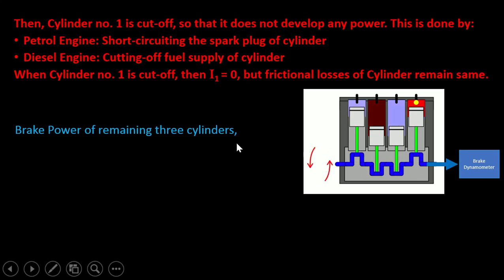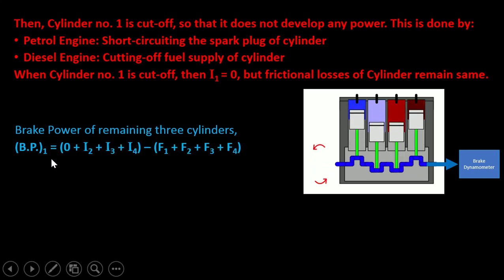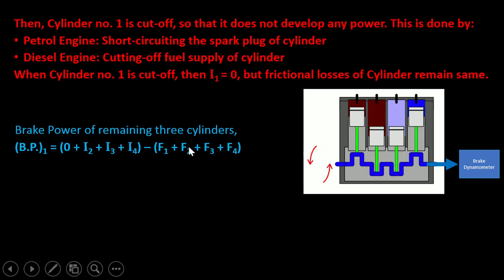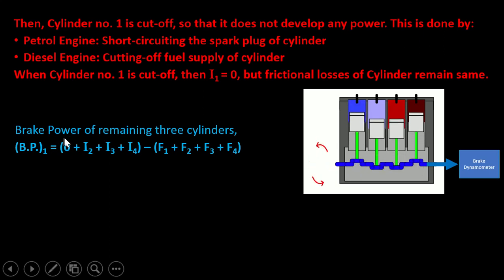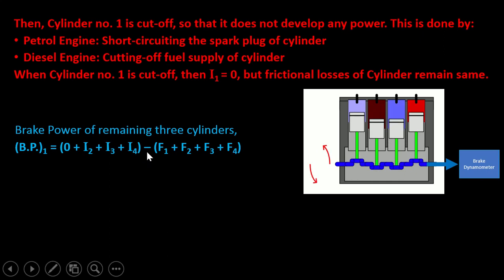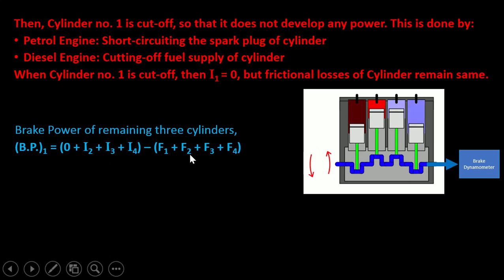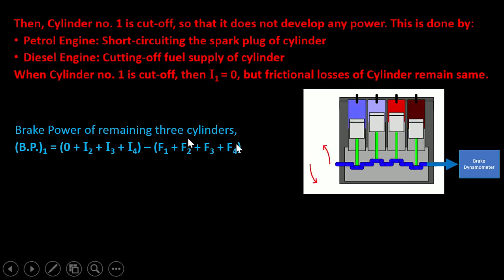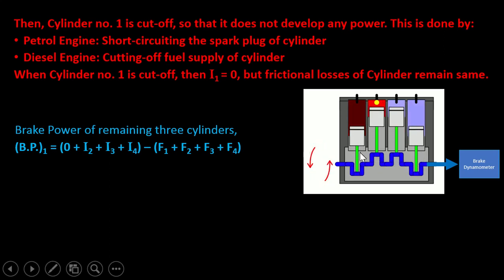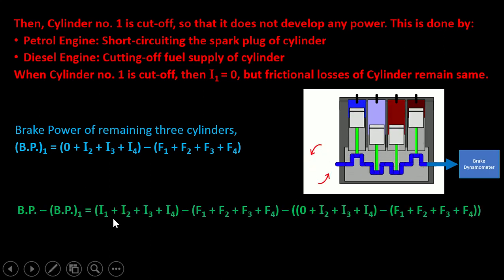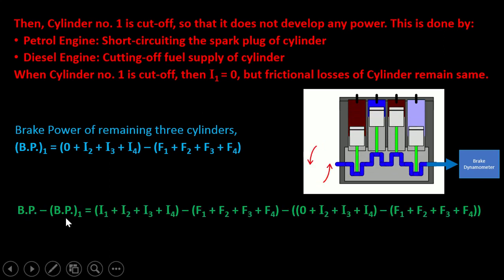The brake power of the remaining cylinders, BP1 — that is brake power when cylinder 1 is cut off — will be equal to 0 + I2 + I3 + I4 minus the total frictional power of all cylinders, that is F1 + F2 + F3 + F4. So we have cut off cylinder number 1 and found the brake power of the remaining 3 cylinders.